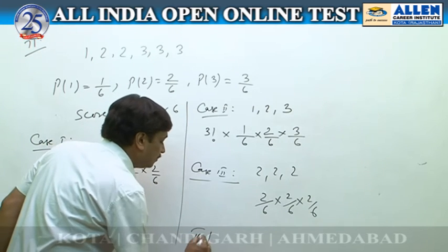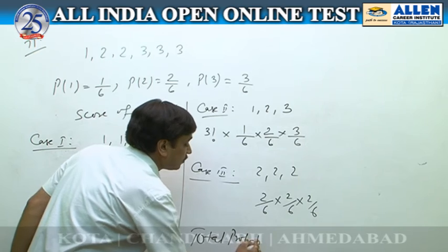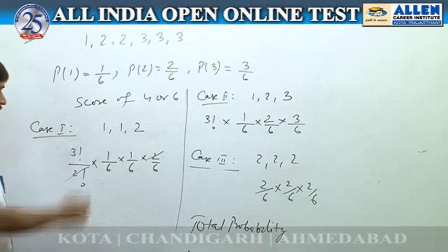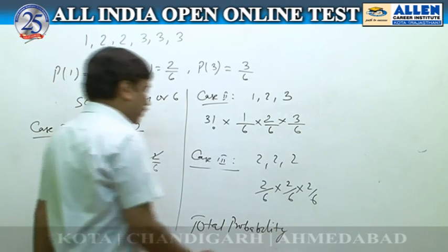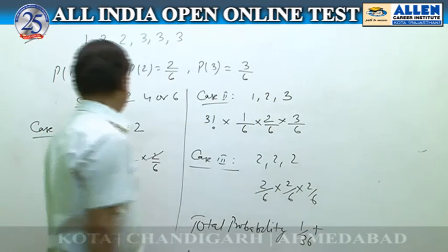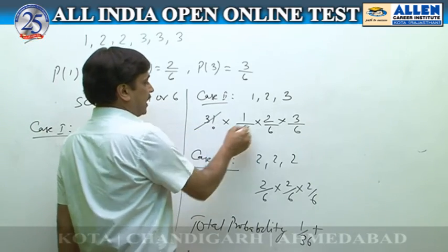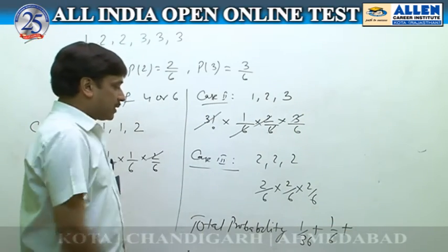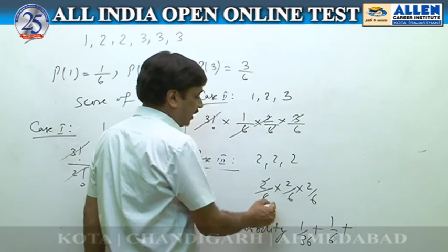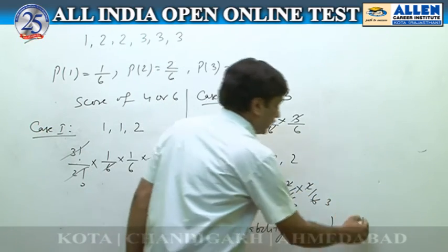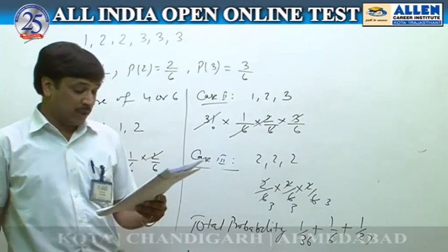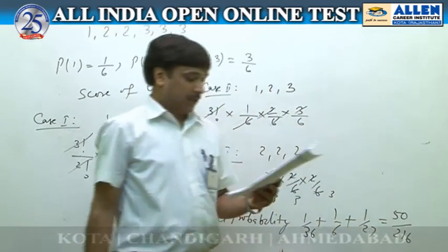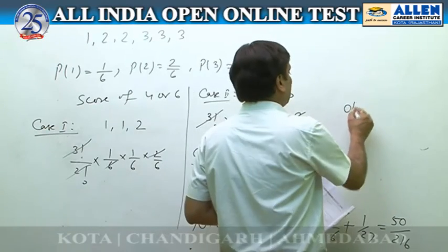Adding all cases: after simplifying, Case 1 gives 1/36, Case 2 gives 1/6, and Case 3 gives 1/27. The total probability works out to 50/216. According to the given options, option number 2 is correct.